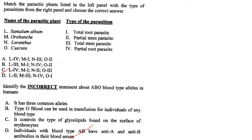Match the parasitic plants with their type of parasitism. Santalum album is a partial root parasite — L4. Orobanche is a total root parasite — M1. Loranthus is a partial stem parasite, so option A with N3 is wrong. Cuscuta is a total stem parasite. Therefore answer is option C.